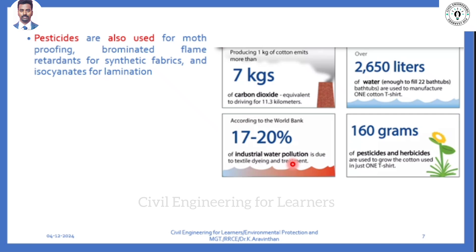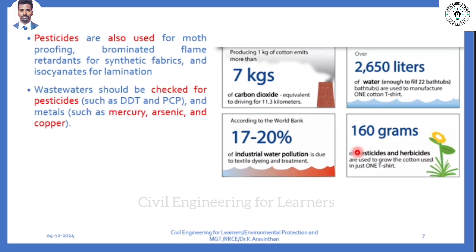This is why the syllabus highlights textile industry first - the water is highly polluted. Around 17 to 20 percent of overall water pollution is caused by the textile industry alone. Additionally, 160 grams of pesticides and herbicides are sprayed on cotton plants to protect them from bacteria or virus effects. In wastewater, hazardous waste includes mercury, arsenic, and copper - with mercury being highly hazardous.